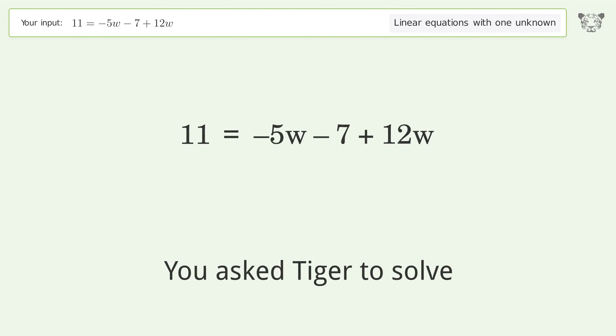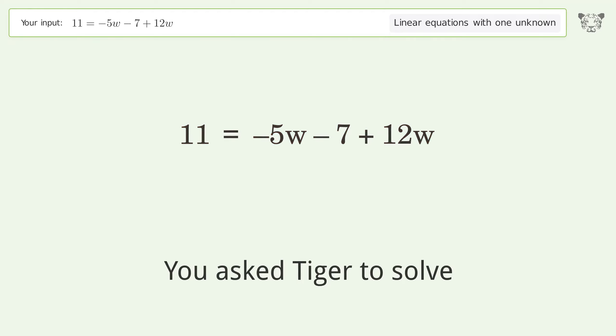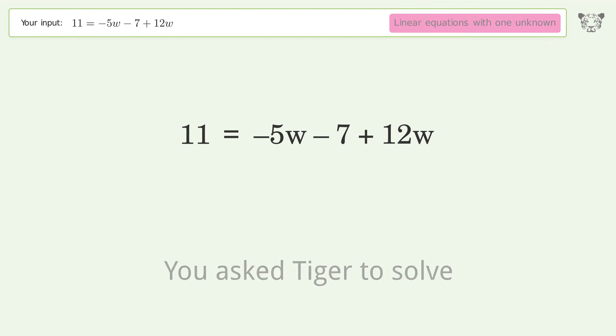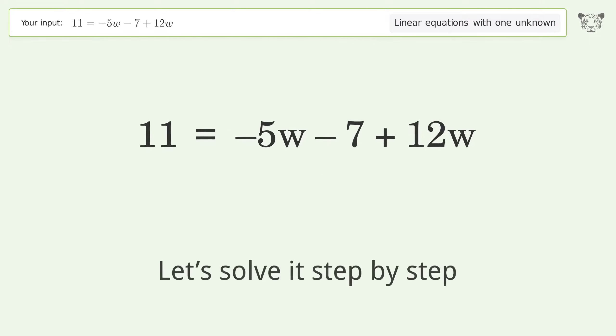Tiger is asked to solve a problem that deals with linear equations with one unknown. The final result is w equals 18 over 7. Let's solve it step by step.